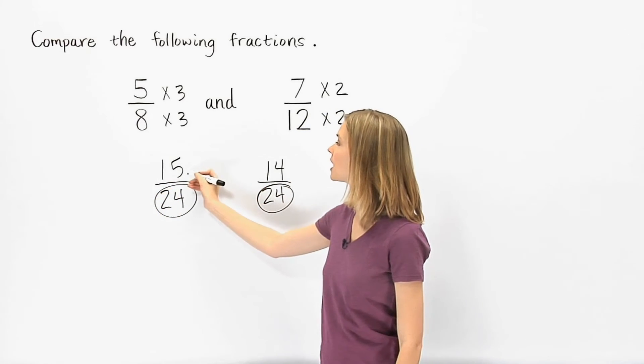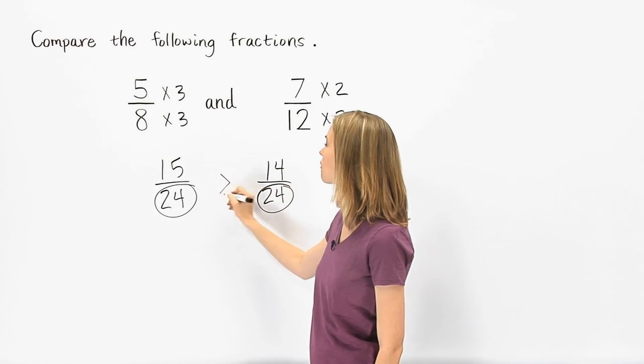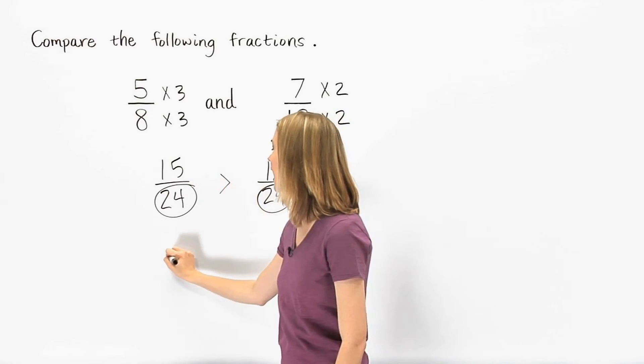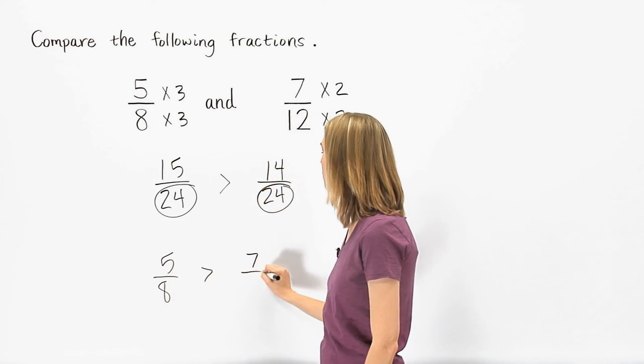Since 15 is greater than 14, we know that 15 over 24 is greater than 14 over 24. This means that 5 over 8 is greater than 7 over 12.